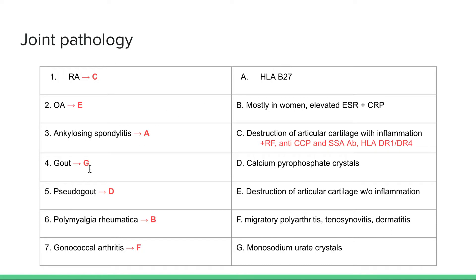Gout versus pseudogout: gout is in younger folks; pseudogout is seen in an older, over-50 population. In gout we see monosodium urate crystals; in pseudogout we see calcium pyrophosphate crystals.